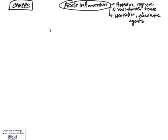What are some of these injurious agents or causes of acute inflammation? We'll start off with biological agents, such as microbial organisms. This includes things like bacteria, fungal organisms, parasites, etc.